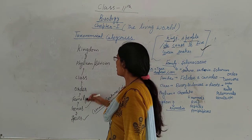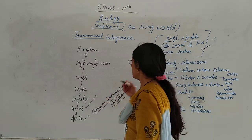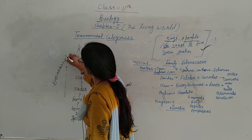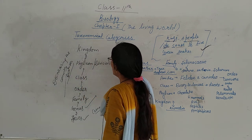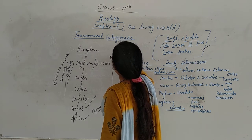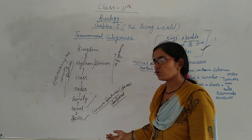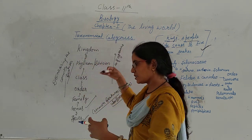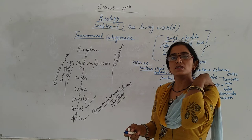Next is genus. As we move from species upward to genus, the common features decrease but the number of organisms increases. If we move downward toward species, the number of features increases and the number of organisms decreases. If we move upward, the common features decrease but the number of organisms will increase.